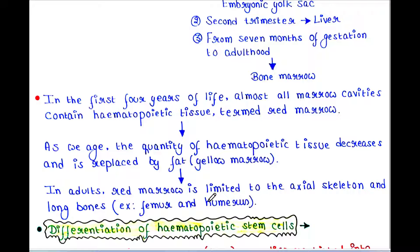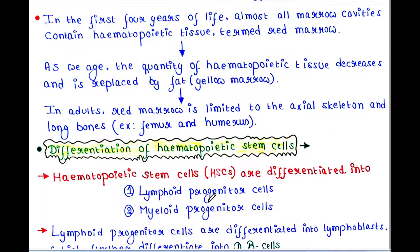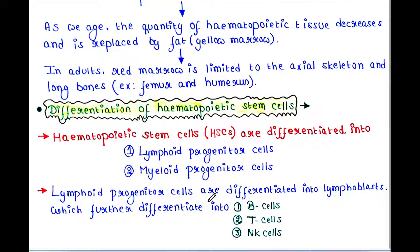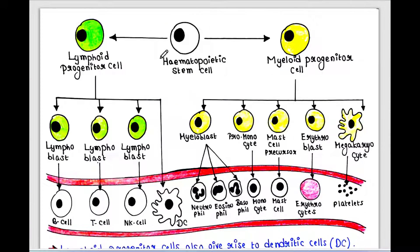Let's talk about differentiation of hematopoietic stem cells. Hematopoietic stem cells, or HSCs, are differentiated into lymphoid progenitor cells and myeloid progenitor cells.